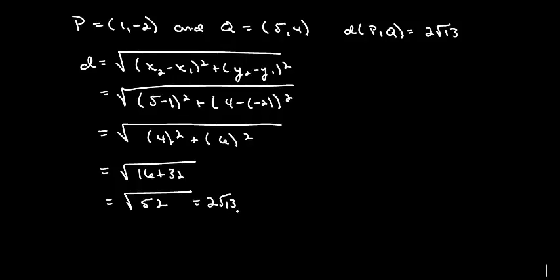And if we only want 2 fifths of that distance, then we take 2 fifths times 2 square root of 13, and we end up with 4 square root of 13 over 5.